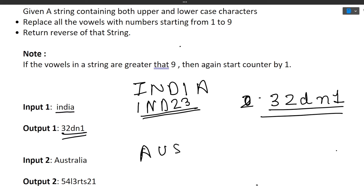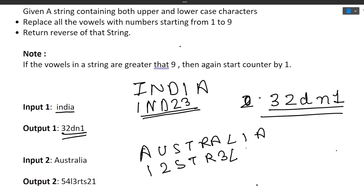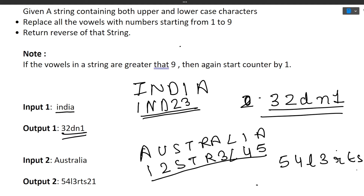Next example: 'australia'. 'a' is a vowel → 1, 'u' is a vowel → 2, 's' is not, 't' is not, 'r' is not, 'a' is a vowel → 3, 'l' is not, 'i' is a vowel → 4, 'a' is a vowel → 5. After replacement we reverse the string, giving output '54l3rts21'. So we first replaced all vowels with incrementing numbers, then reversed the string.